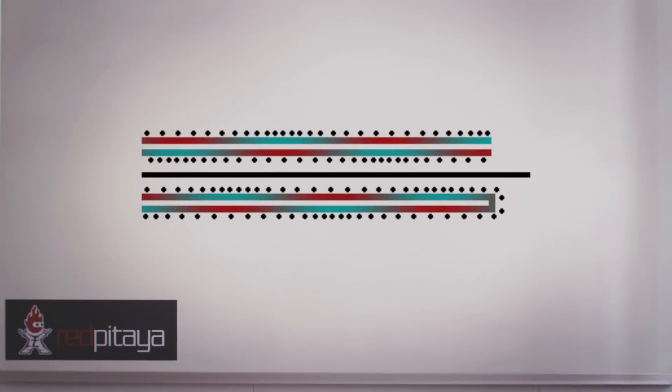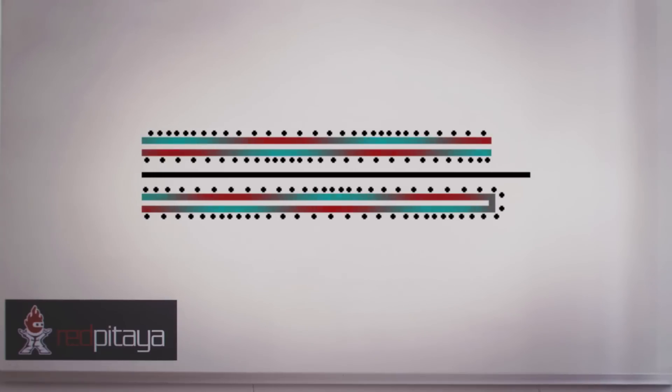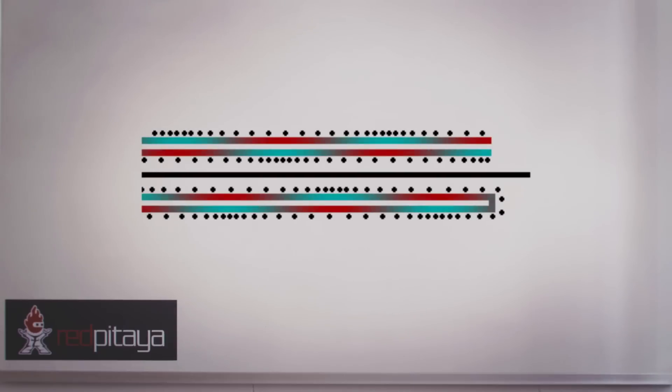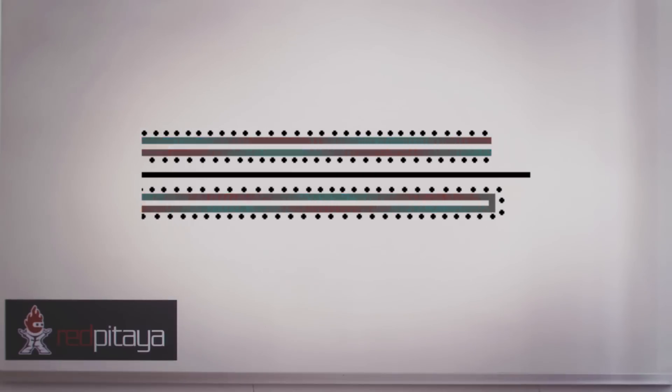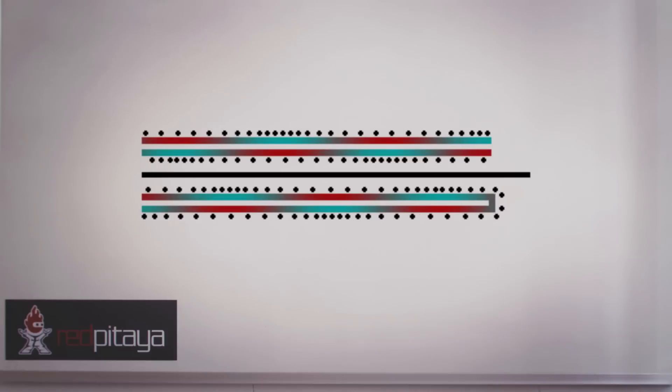When there is a short circuit at the end of the line, the voltage must be zero since there can be no volts across a short circuit. Again, all of the energy must be reflected back up the line and reflected voltage must be equal and opposite to the incident voltage by Kirchhoff's voltage law.